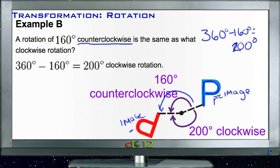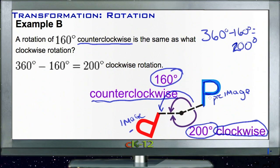So we can either go counterclockwise 160 degrees or we can go clockwise 200 degrees, and either way we'll get from the same pre-image to the same image because we're ending up in the same location.